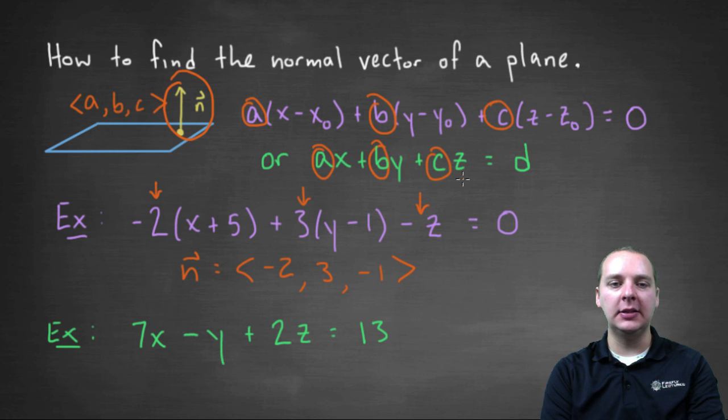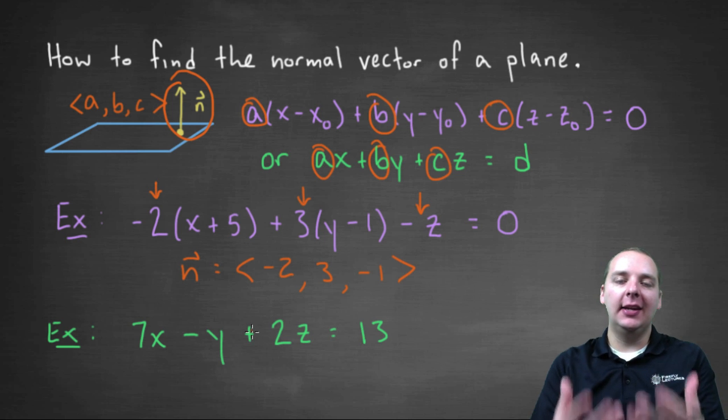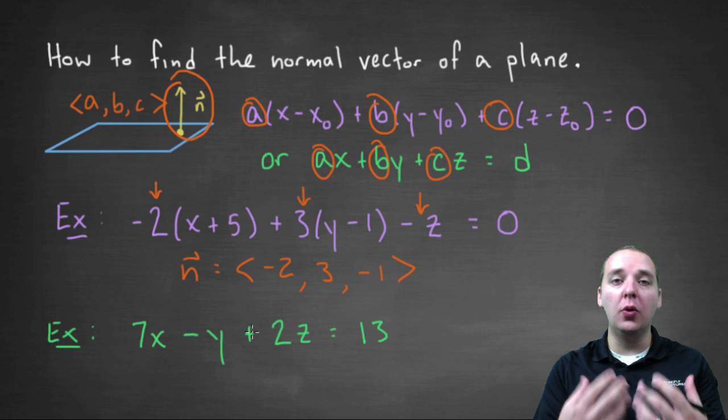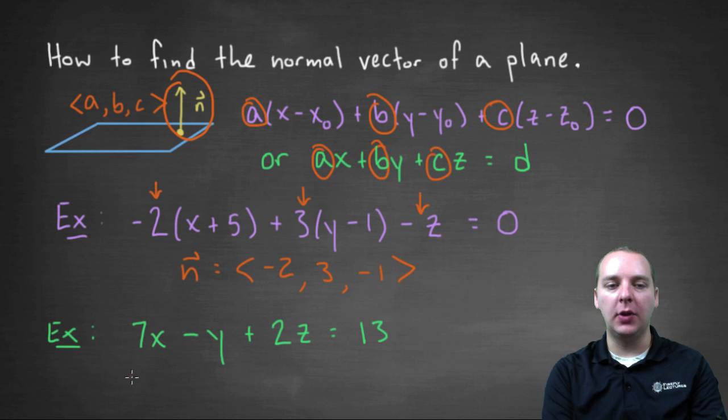and the coefficient of z. You still have your a, b, c. So let's finish with an example in general form. Let's say the equation of our plane is 7x minus y plus 2z equals 13. Can you look at that and extract what the normal vector to the plane would be?